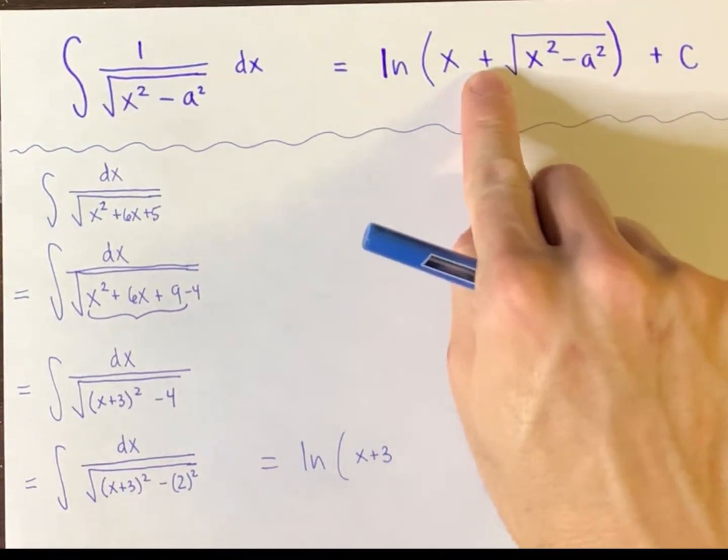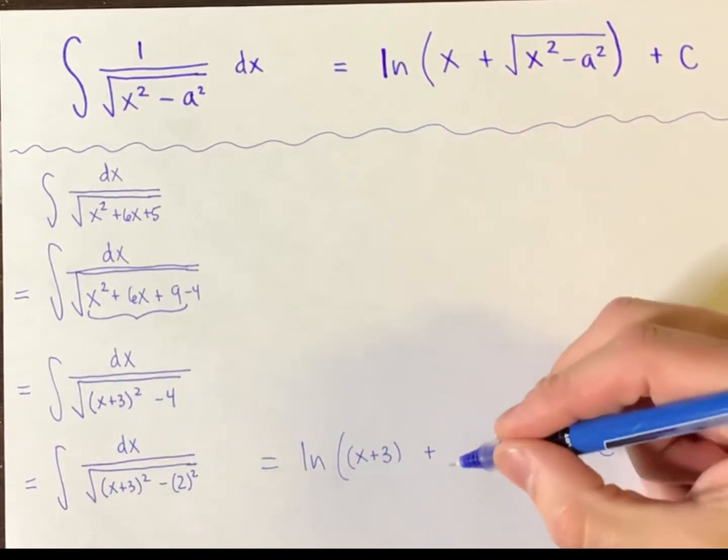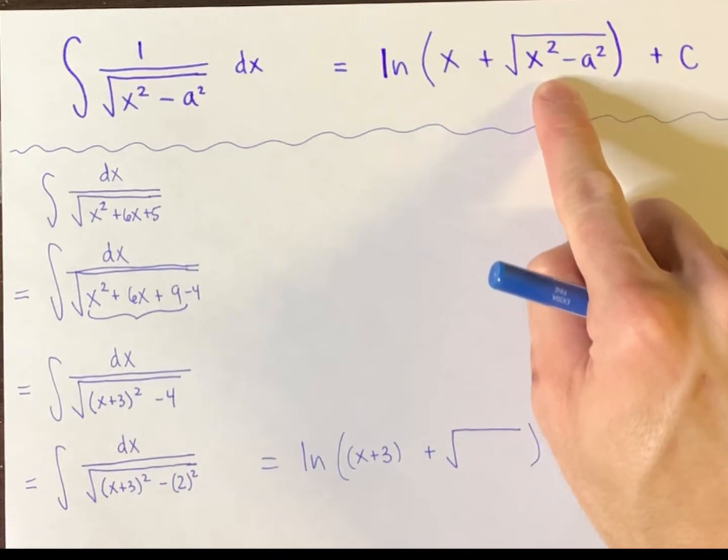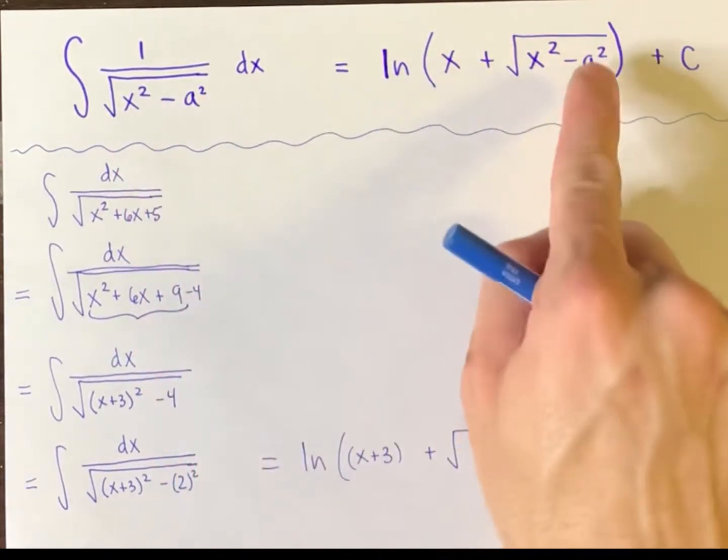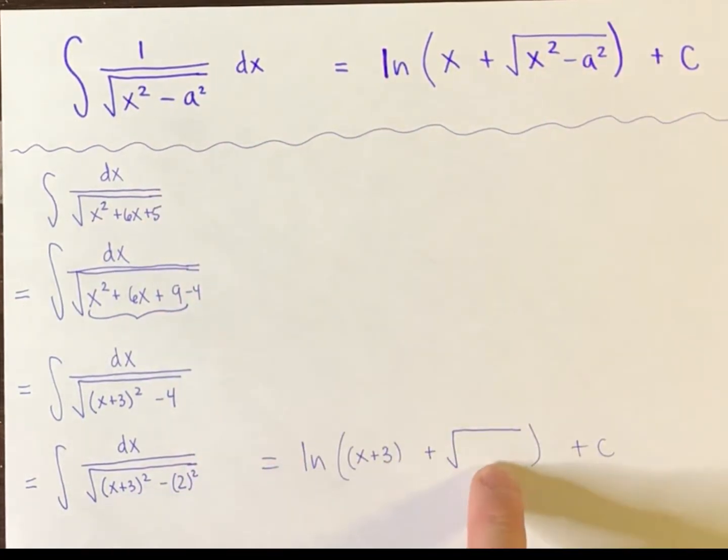Then we have addition right there. And then we have a square root. And what exactly goes inside of the square root? The identical copy of whatever is inside of that square root. You see that? Whatever this is, just copy and paste it there. So just copy and paste that here.